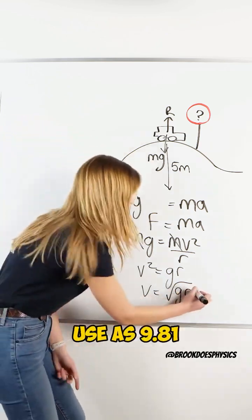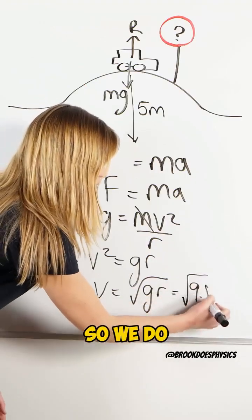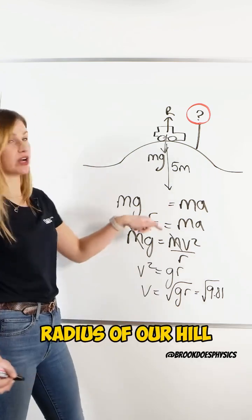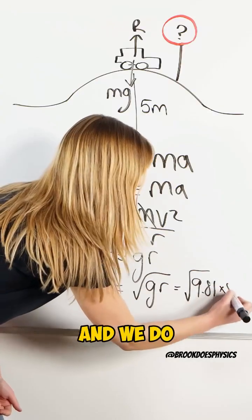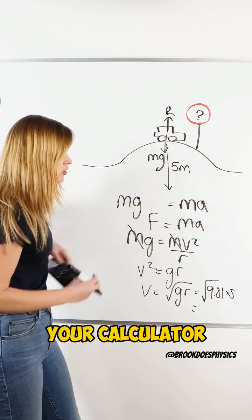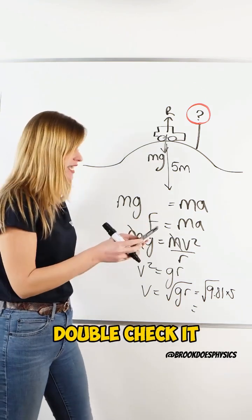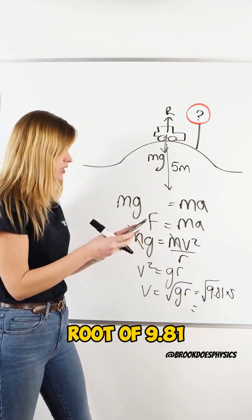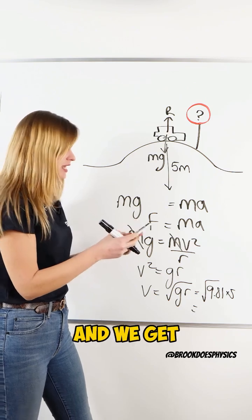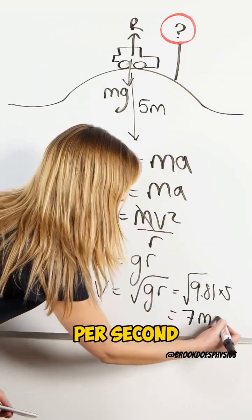And gravity on Earth we always use as 9.81. We do 9.81 times the radius of our hill, which is 5. And we do that math in your calculator, coming at a number of 7. You do square root of 9.81 times by 5, and we get an answer of 7 meters per second.